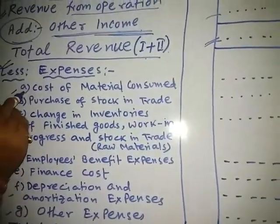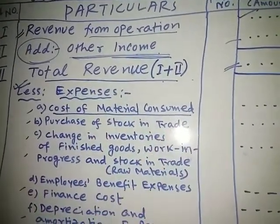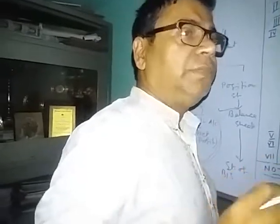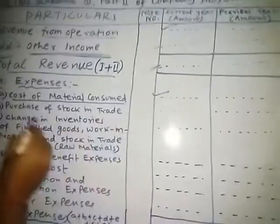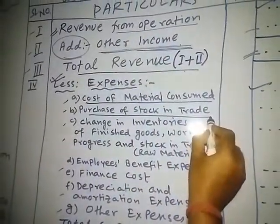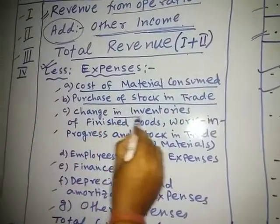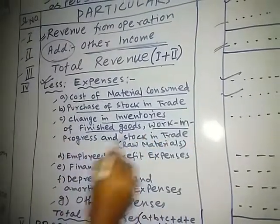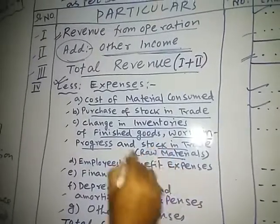Now, whatever expenses are coming: first, cost of materials consumed — meaning the raw materials consumed by the company — which is an expense. Then, purchase of stock-in-trade, which is also an expense. Then, change in inventory. Inventory refers to three things: finished goods, work in progress, and stock-in-trade.